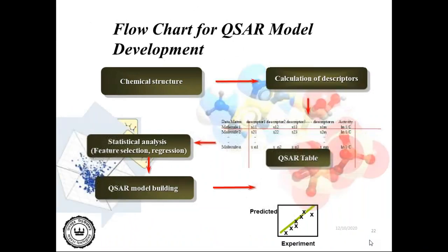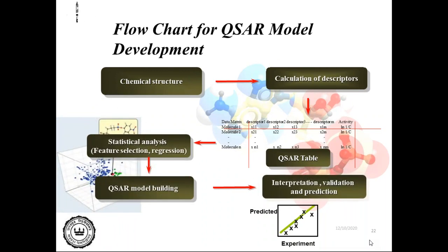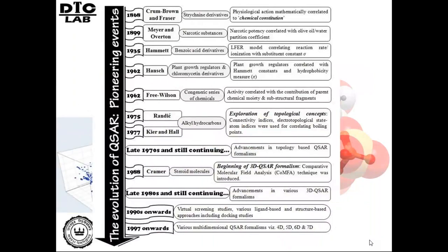Starting from chemical structure, we compute descriptors, develop a QSAR model, apply appropriate statistical methods, and then use it for interpretation, validation, and prediction. If we see the history of QSAR development, the concept started long back as far as 1868 with Brown and Frazer, who applied it to the physiological action of strychnine derivatives that could be mathematically correlated to chemical constitution. At that time QSAR was not in its present form, but the concept was there — that physiological action of strychnine derivatives depended on chemical constitution, meaning biological activity is a function of chemical structure.